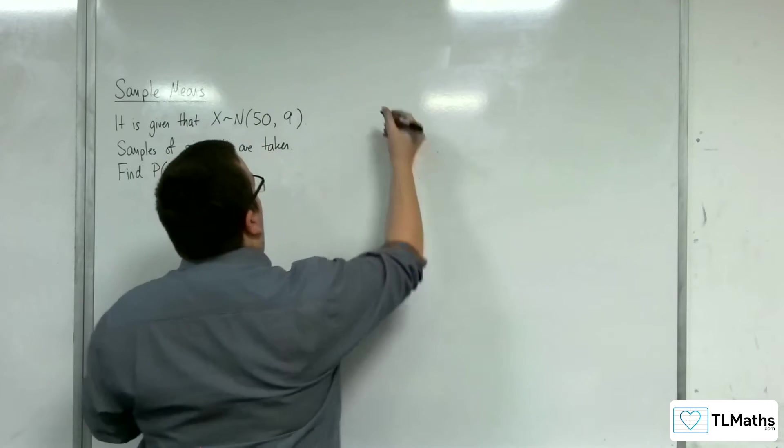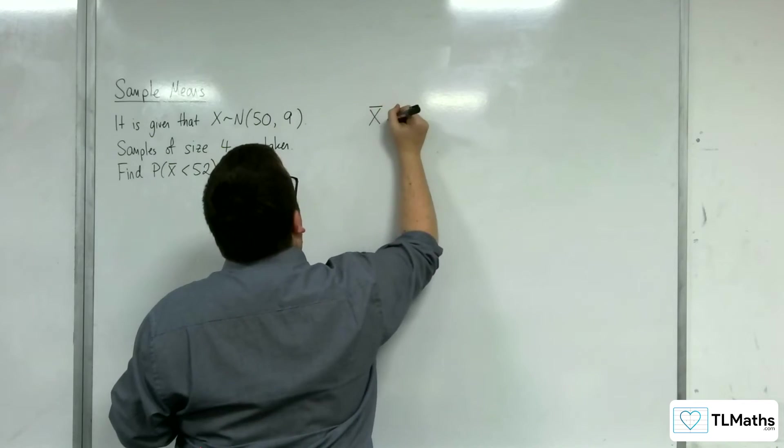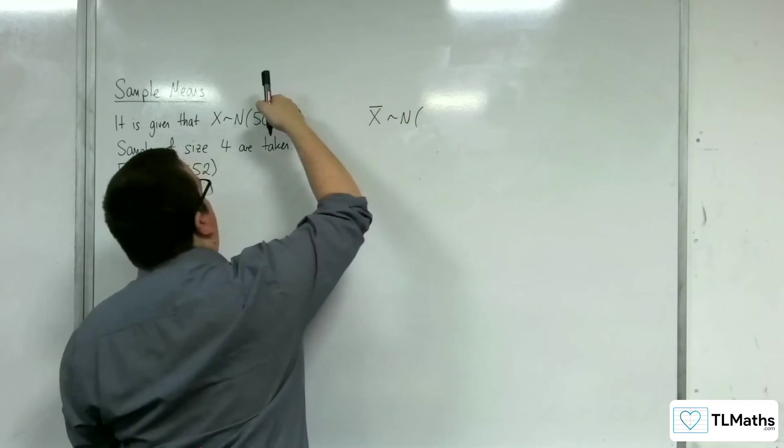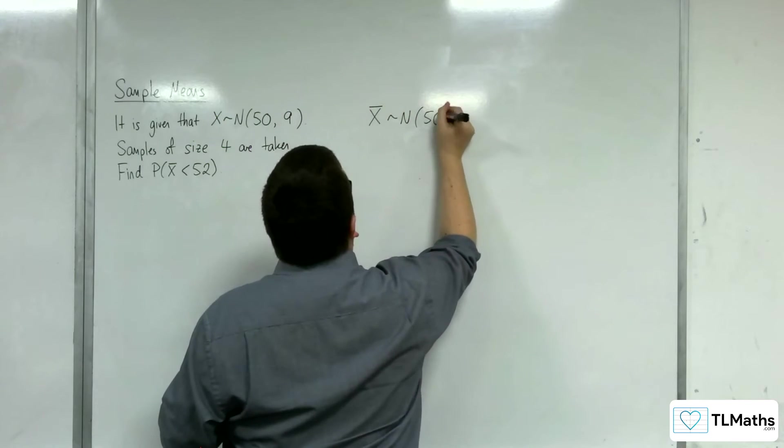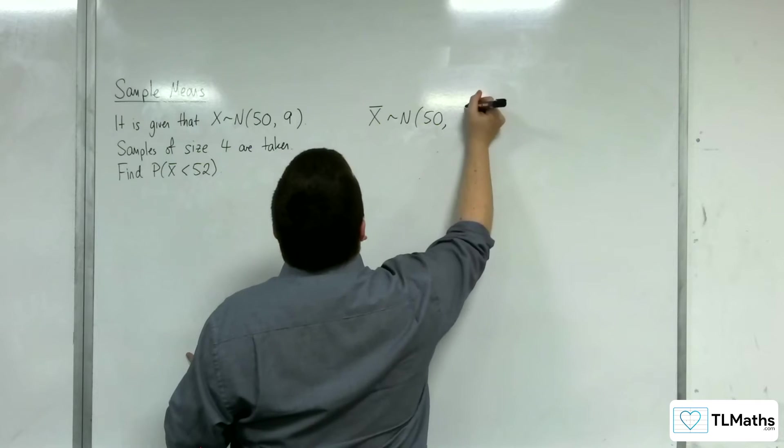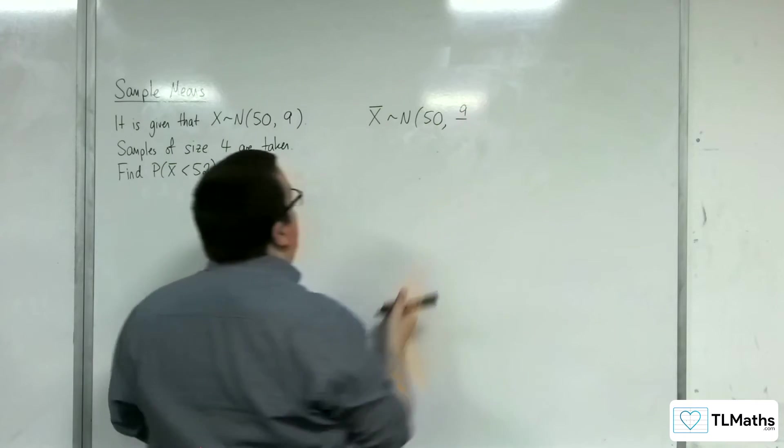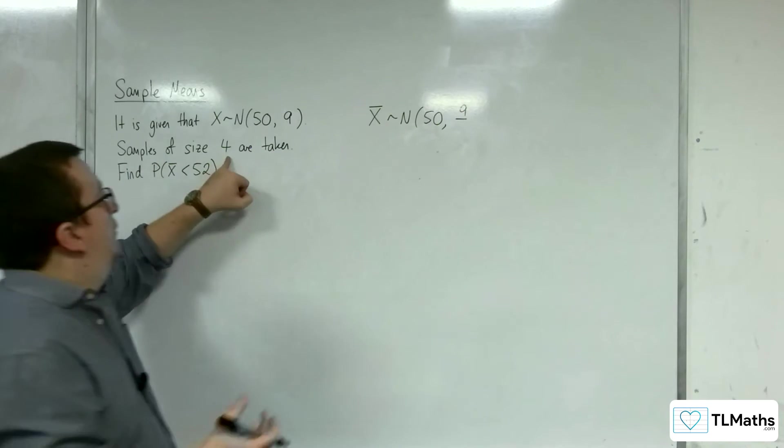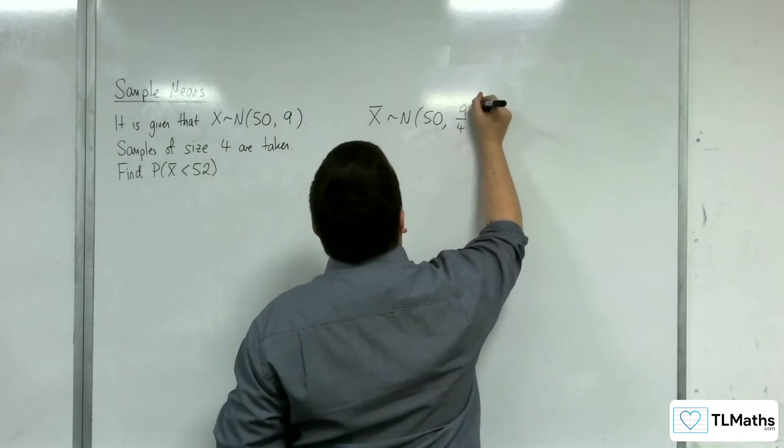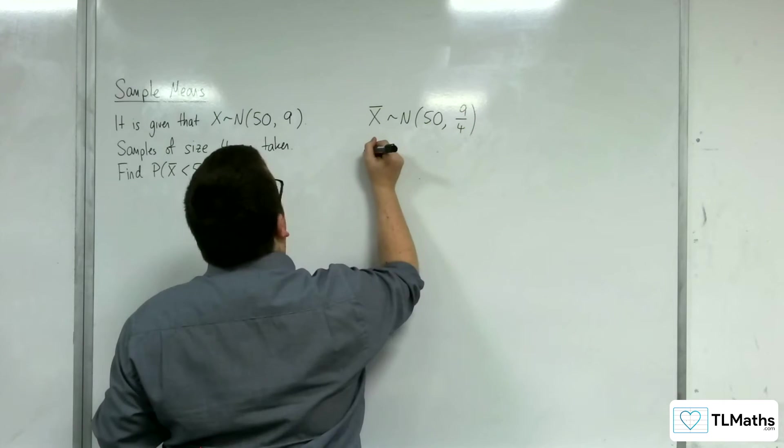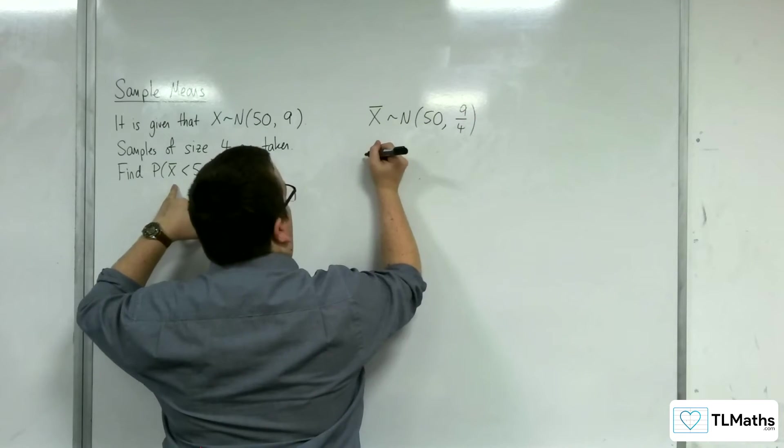So our sample means are normally distributed with the same mean as before, so 50, but the variance is the 9 divided by the sample size, 4. And we want to find the probability that x̄ is less than 52.